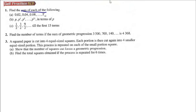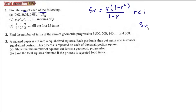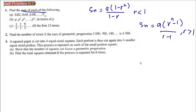Find the sum of each of the following. The formula for sum Sₙ is: Sₙ = A(1 - Rⁿ) / (1 - R) if R is smaller than 1, and Sₙ = A(Rⁿ - 1) / (R - 1) if R is larger than 1. R cannot equal 1 because multiplying by 1 gives the same answer, so there is no progression.